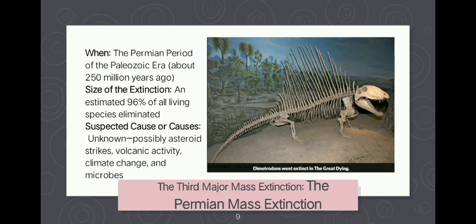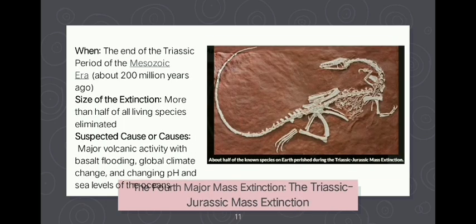It is still much of a mystery what set off this Great Dying mass extinction event. The fourth major mass extinction, the Triassic-Jurassic mass extinction, occurred at the end of the Triassic period about 200 million years ago. More than half of all living species were eliminated, with suspected causes including major volcanic activity with basalt flooding, global climate change, and changing pH and sea levels of the oceans.